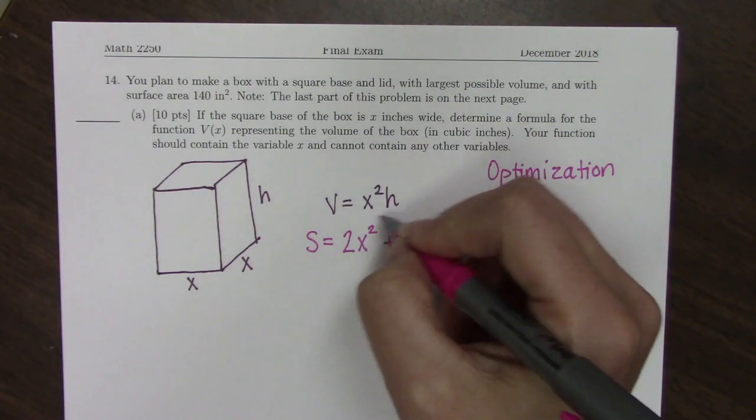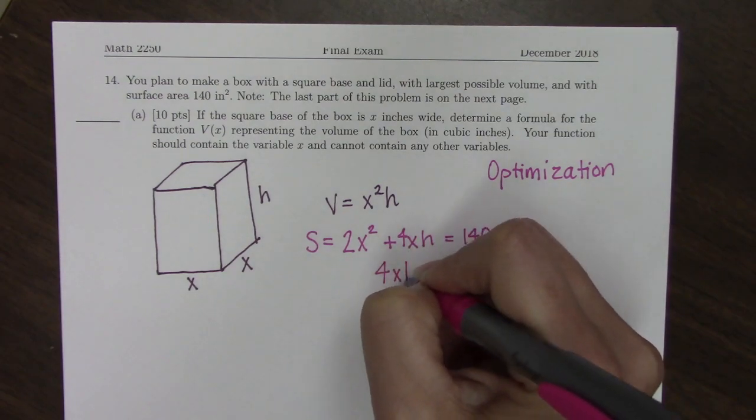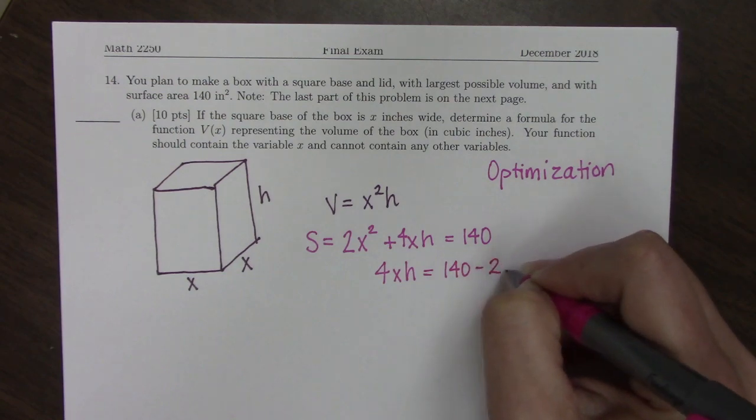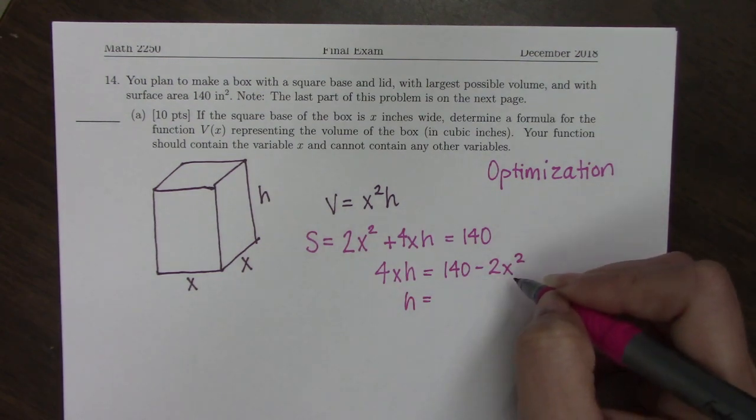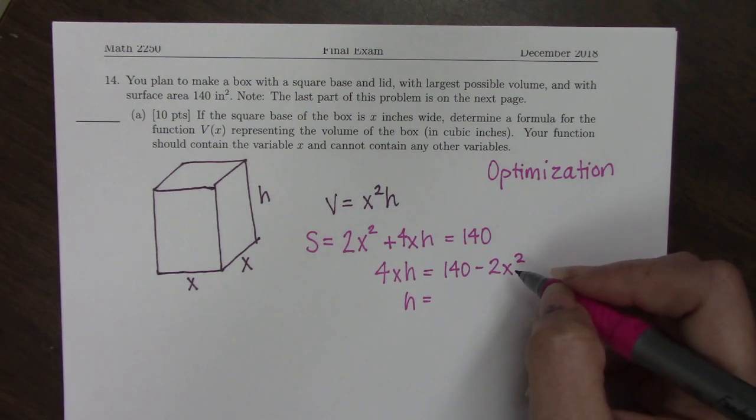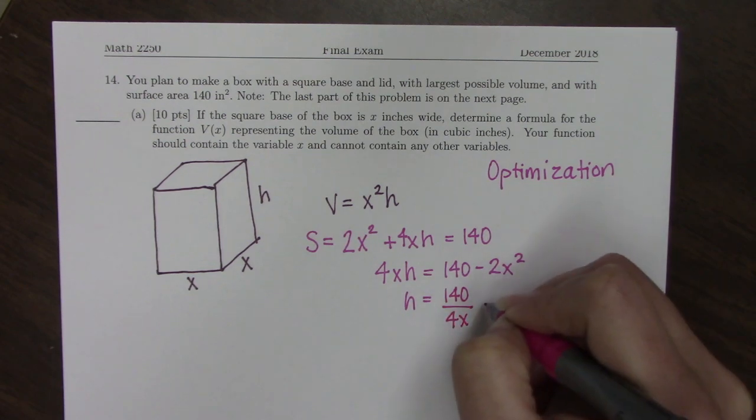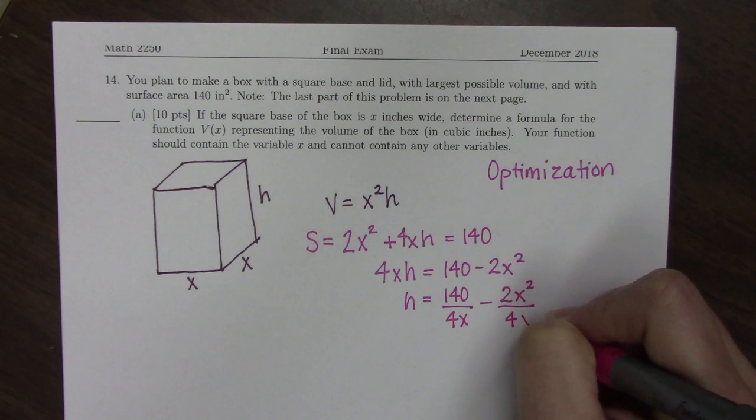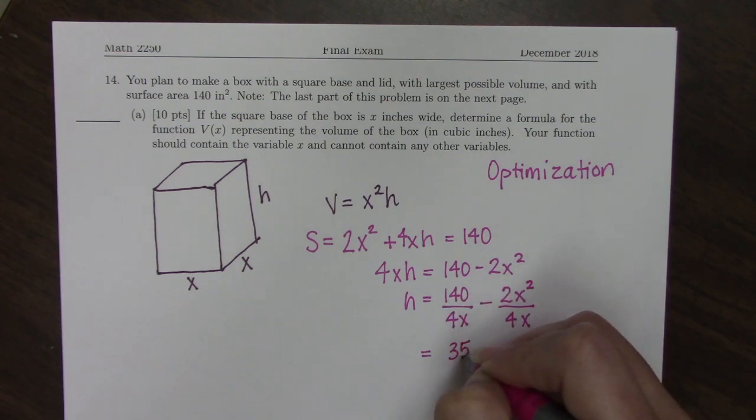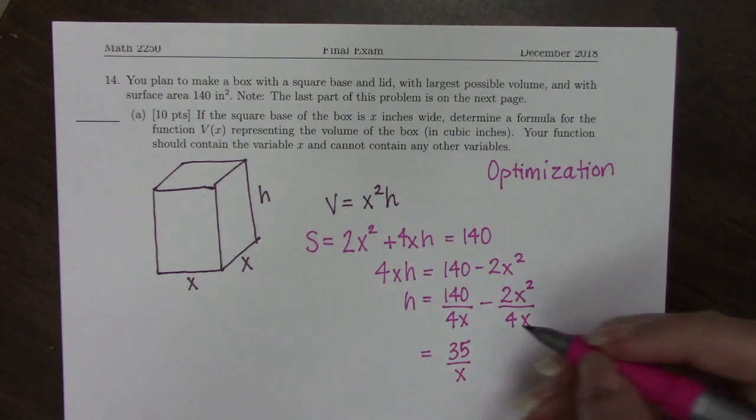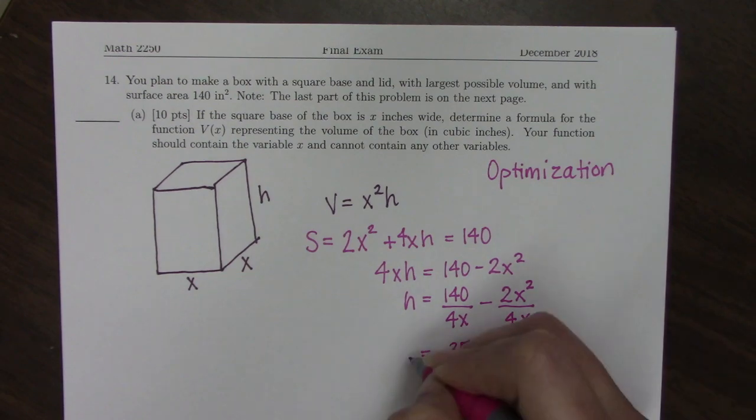To get this formula in just x I need to figure out what h is and substitute. So I'm going to solve this for h. So 4xh equals 140 minus 2x². And since I know derivatives are going to probably be in my future, it would make a lot more sense if I divided each piece by 4x. So 140 divided by 4x minus 2x² divided by 4x. This reduces to 35/x minus x/2, so h = 35/x - x/2.